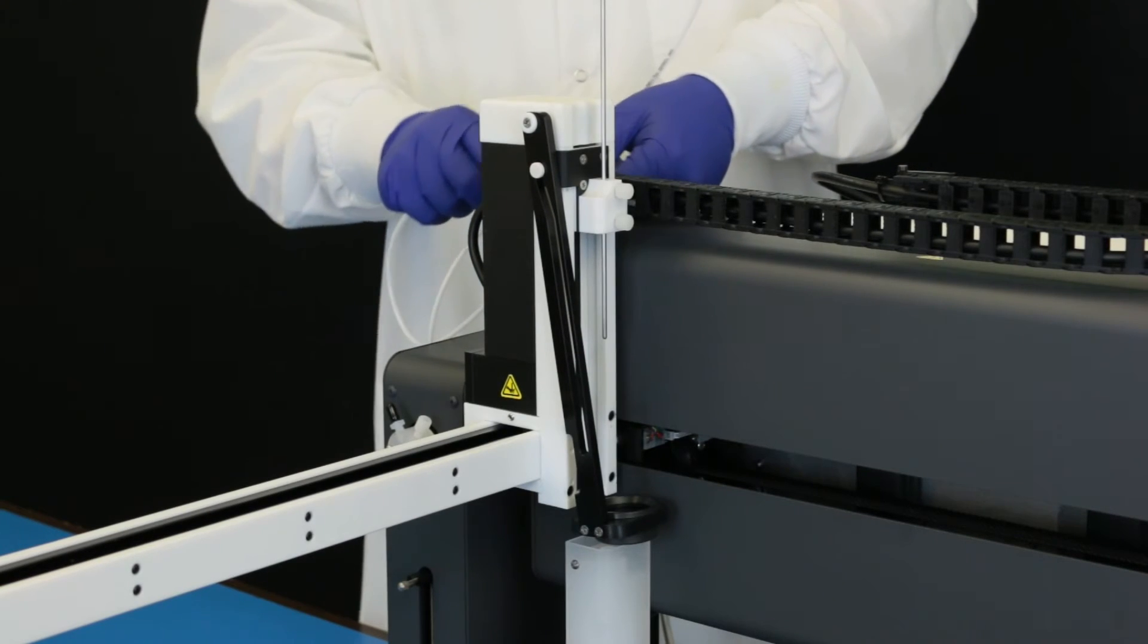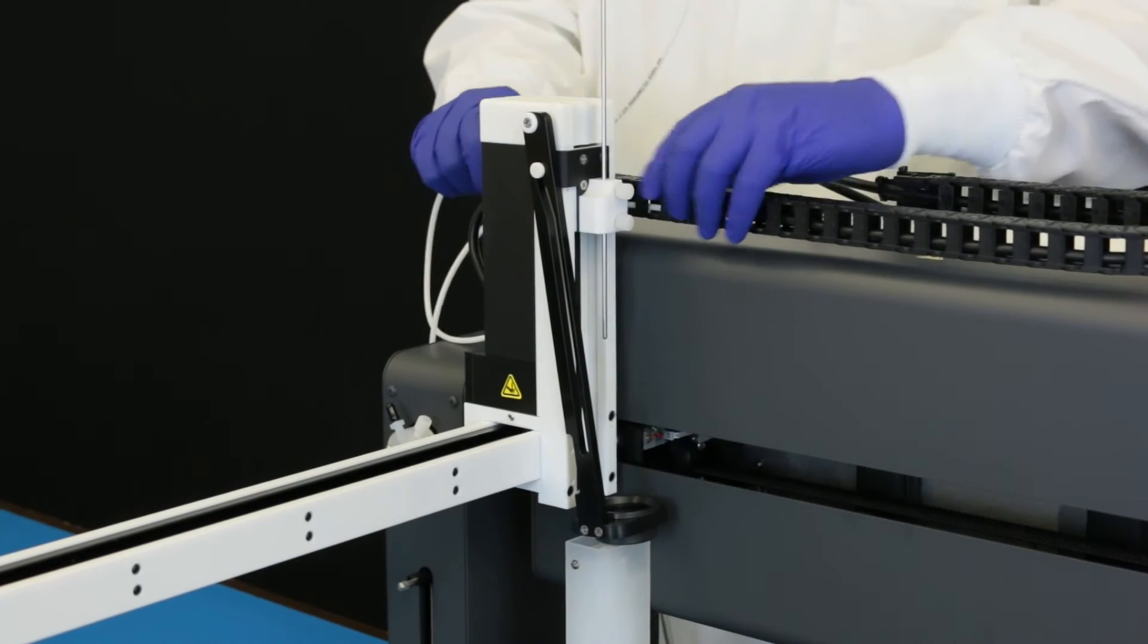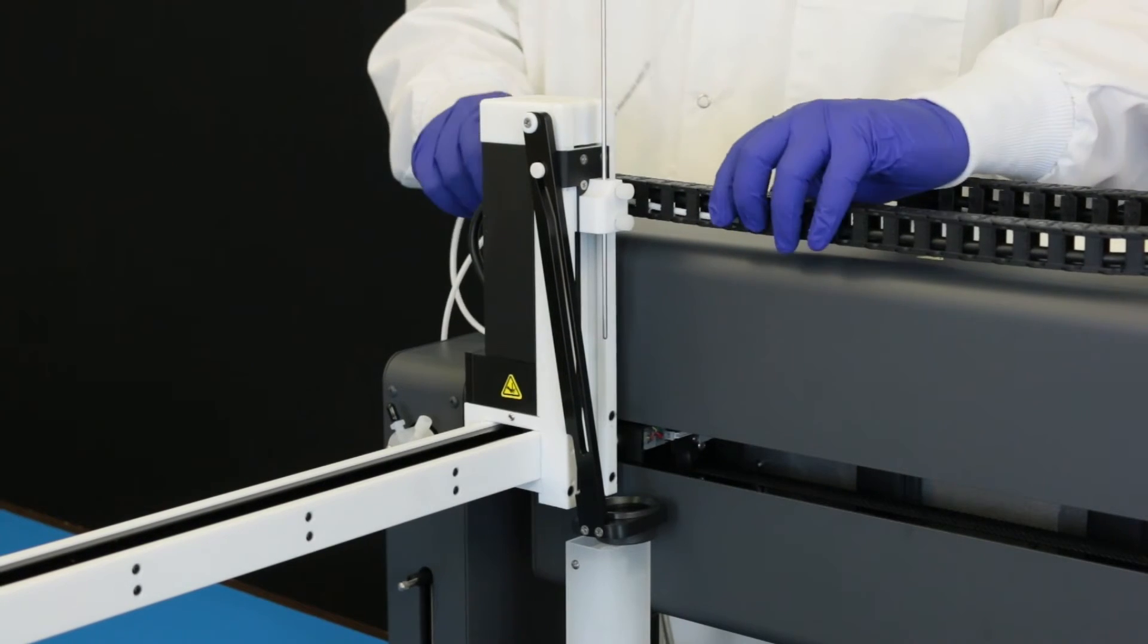Route the probe tubing through the chain on the top of the autodiluter. Check that the tube will not stretch or snag as the probe moves up and down.